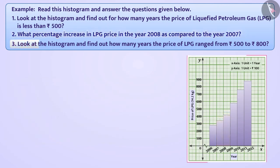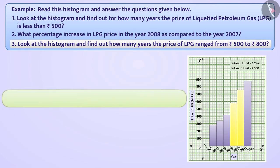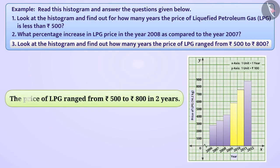Look at the histogram and find out for how many years the price of LPG ranged from 500 rupees to 800 rupees. In the year intervals 2009 to 2010 and 2010 to 2011, the price of LPG is between 500 and 800 rupees. So we can say that in two years the price of LPG ranged from 500 rupees to 800 rupees.